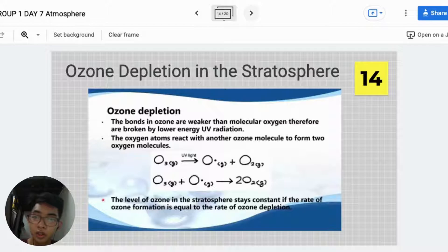Ozone depletion in the stratosphere. Ozone depletion. The bonds in ozone are weaker than molecular oxygen, therefore are broken by lower energy UV radiation. The oxygen atoms react with another ozone molecule to form two oxygen molecules.